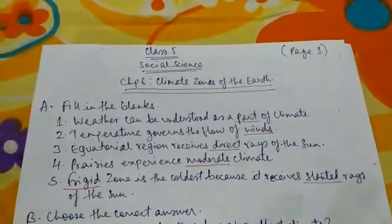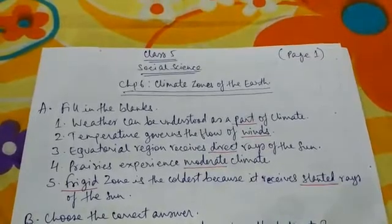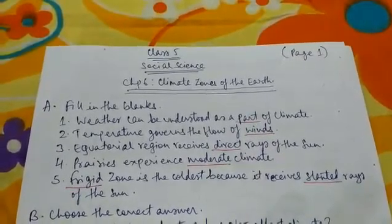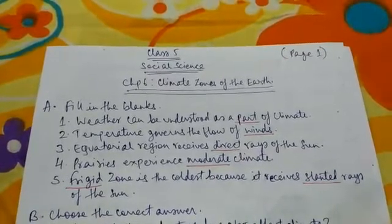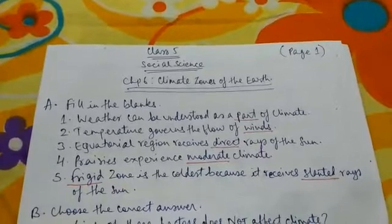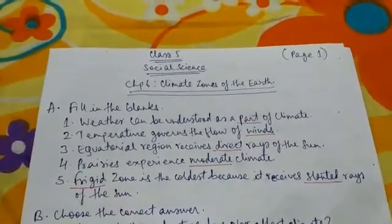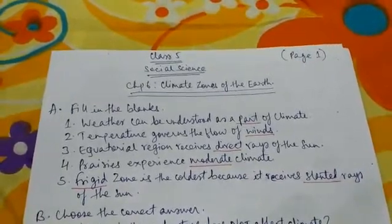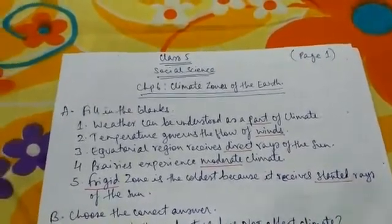Good morning, Maria students. Welcome to St. Michael's e-learning classes. My name is Francis Sir and today we will be solving the fill in the blanks, choose the correct answer, etc. of chapter 6 of Social Science for Standard 5. The name of chapter 6 is Climate Zones of the Earth. So let's solve the question answers accordingly.